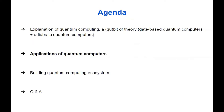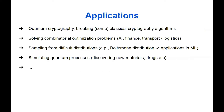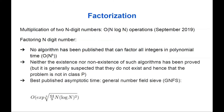This has very interesting applications. For example, there are now algorithms for breaking some classical cryptographic algorithms. Quantum algorithms might be applied for solving combinatorial optimization problems, which frequently occur in artificial intelligence, finance, and transport logistics. Thanks to true randomness, we can sample from difficult distributions such as the Boltzmann distribution, which finds applications in machine learning. We can also simulate quantum processes, which may help us discover new materials and new drugs.